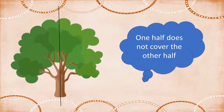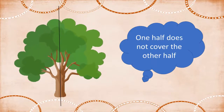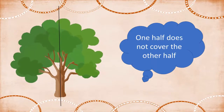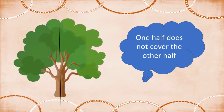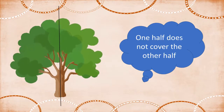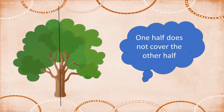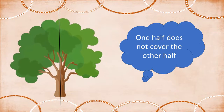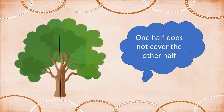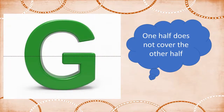Children, now in this figure, two parts made by a line do not fall exactly on one another, so the figure is asymmetrical about that line. Children, in this figure, English alphabet G is not symmetrical with respect to the dotted line because one half does not cover the other half.